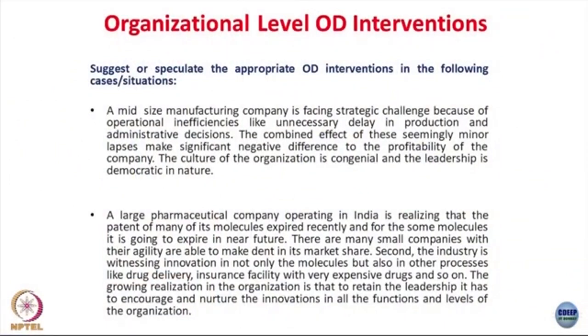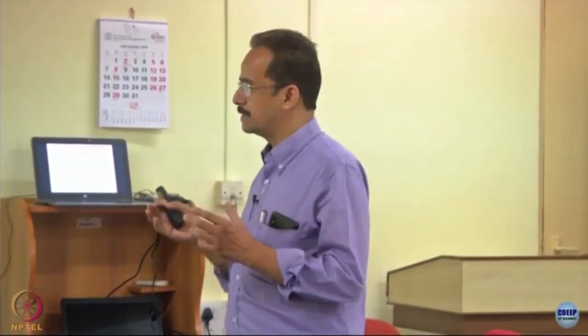Today this session we are going to start with some real life situations and some reflection on what might be the useful intervention in that situation. The first case is about a mid-size manufacturing company facing a strategic challenge because of operational inefficiencies like unnecessary delays in production and administration decisions. The combined effect of these seemingly minor lapses makes a significant negative difference to the profitability of the company. The culture of the organization is genial and leadership is democratic in nature.